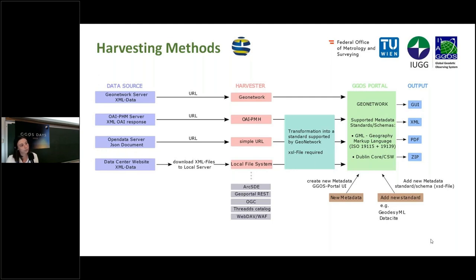If the metadata is provided in a suitable JSON format, it can be simply collected by specifying the URL of the server. The last harvesting method is the local file system harvester. In this case, after downloading the XML files to the local GIGOS portal server, they can easily be imported by specifying the directory path. In the future, the download step could be automated, for example by a Python script.